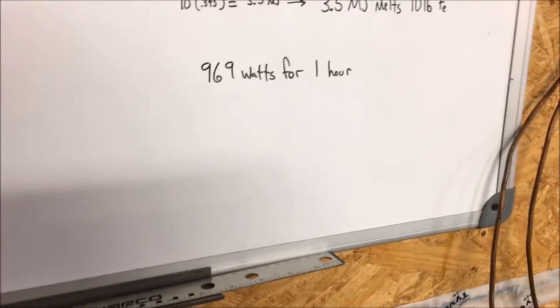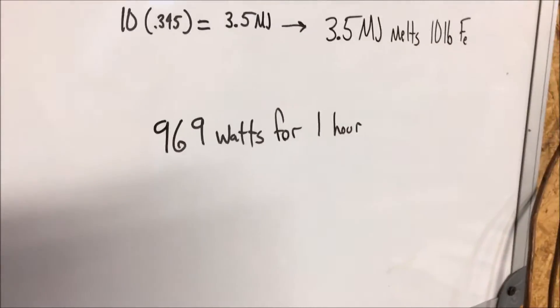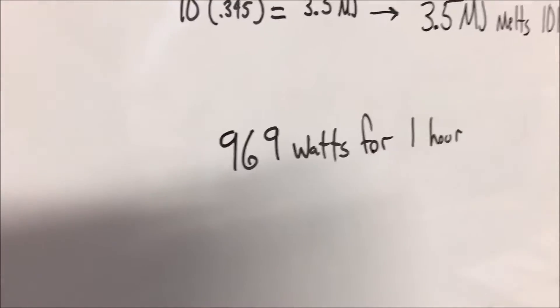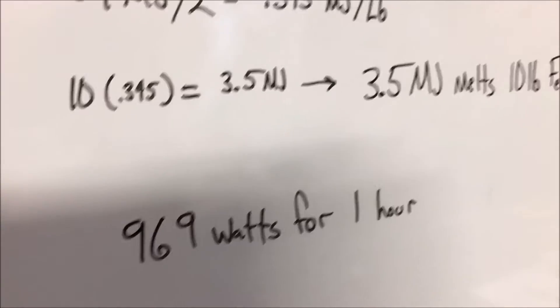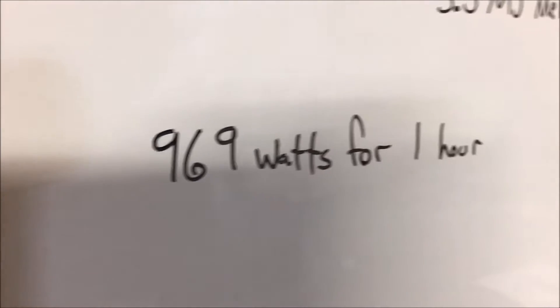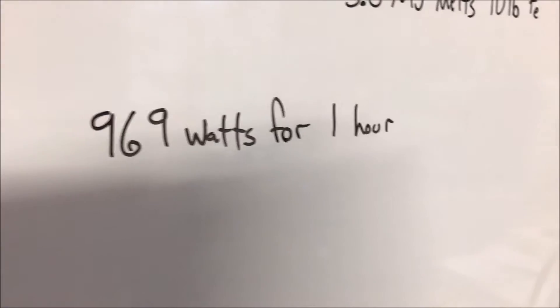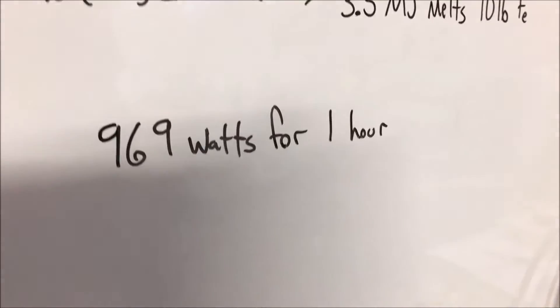So in colloquial terms that means a minimum of 969 watts for one hour is needed to melt 10 pounds of iron. Some of you guys may snicker at that and call me a complete idiot but remember forges don't input all their heat into the crucible. Vast amounts of energy are wasted. If you had a completely contained electrical system I guarantee you a thousand watts and a completely contained system would melt this iron if you left it on for an hour.